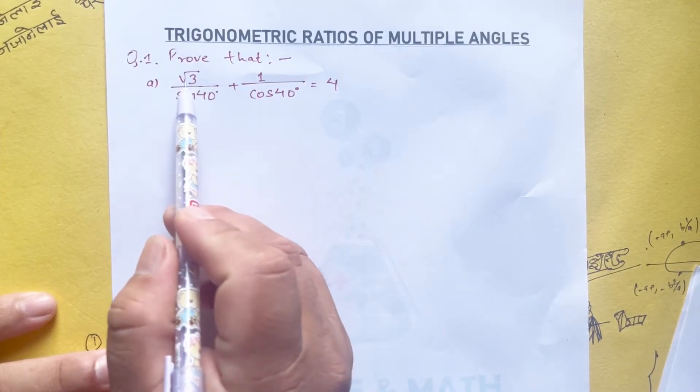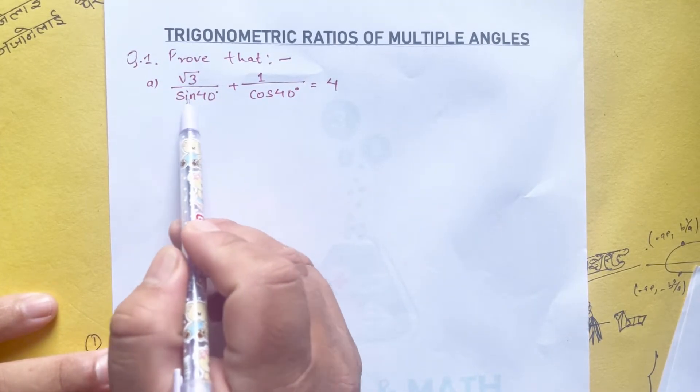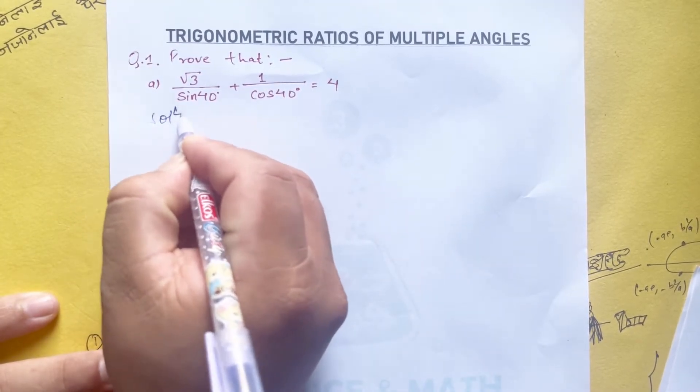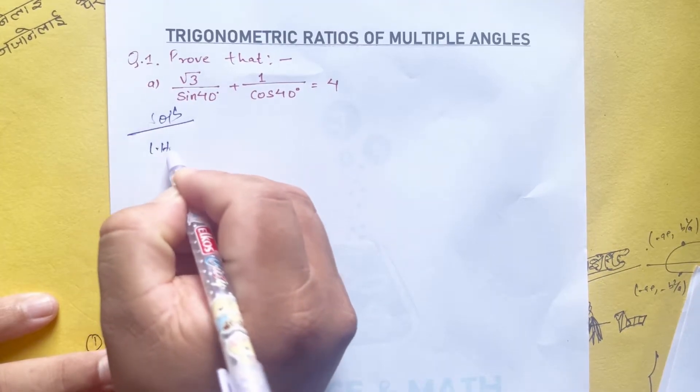Prove that root 3 upon sin 40 degree plus 1 upon cos 40 degree equals to 4. Solution: LHS equals...